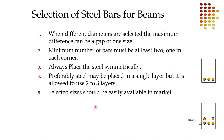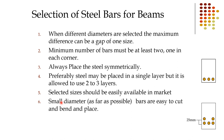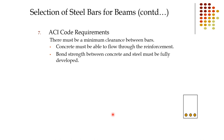Selected bar sizes should be easily available in the market — visit your local market to find which sizes are readily available, as some sizes like 19mm or 16mm may not always be in stock. As far as possible, use smaller diameter bars because they are easier to cut, bend, and place, and their fabrication price from steel fixers is also lower.